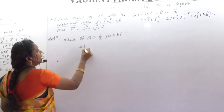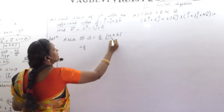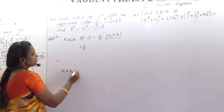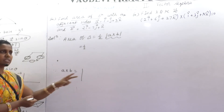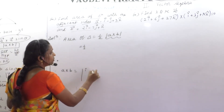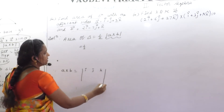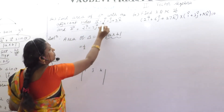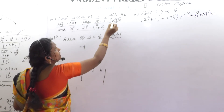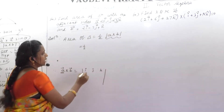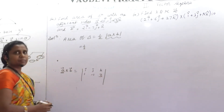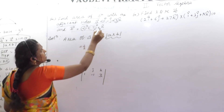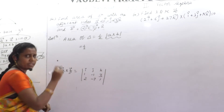A cross B equals — always we find the cross product using the determinant. The first row is always I, J, K. The second row is the components of A: 1, minus 1, 3. And the third row is the components of B: 2, minus 7, 1.